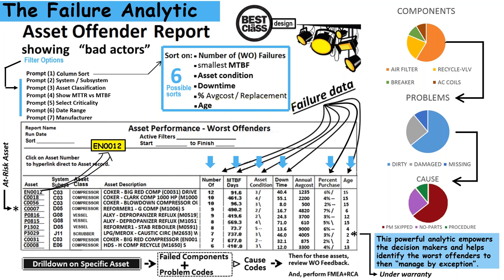For failure treatment prioritization: we're trying to identify the worst offenders. Once we do, that's where we place our focus as maintenance and reliability engineers — to manage by exception, identify the failed component, the problem, and get down to the cause. If we can eliminate the cause, ideally we can prevent this failure from happening again.